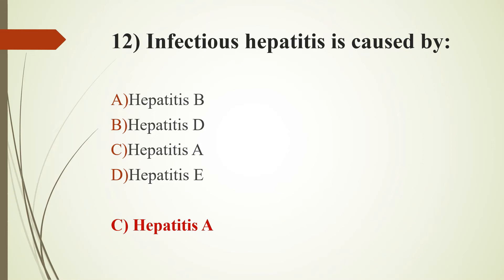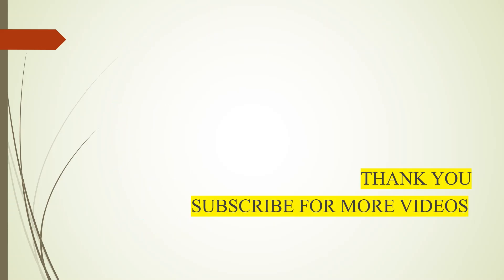To summarize: Hepatitis A causes infectious hepatitis; Hepatitis B causes serum hepatitis; Hepatitis C causes post-transfusion hepatitis; Hepatitis D is the delta agent; Hepatitis E is enterically transmitted hepatitis. Thank you.